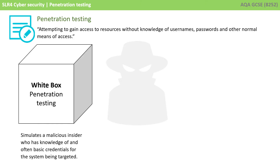There are two types of penetration testing. The first is called white box. This is testing which tries to simulate a malicious insider — someone who works internally for the company — somebody who has knowledge of basic credentials and login information for the system being targeted. It asks: if someone was working inside our company with malicious intent and they knew something about our software, what could they potentially do? What damage could they cause? What flaws could they exploit?